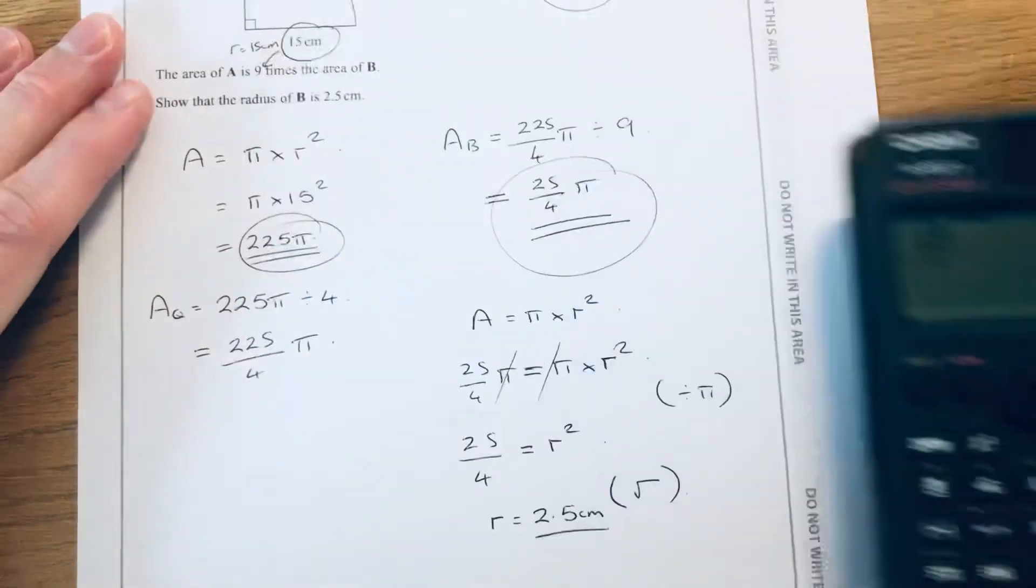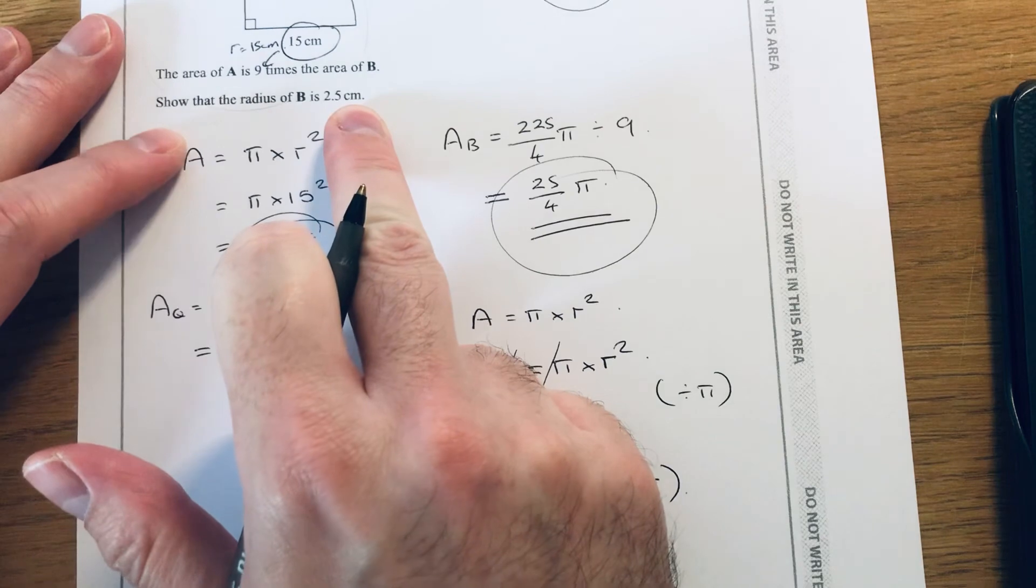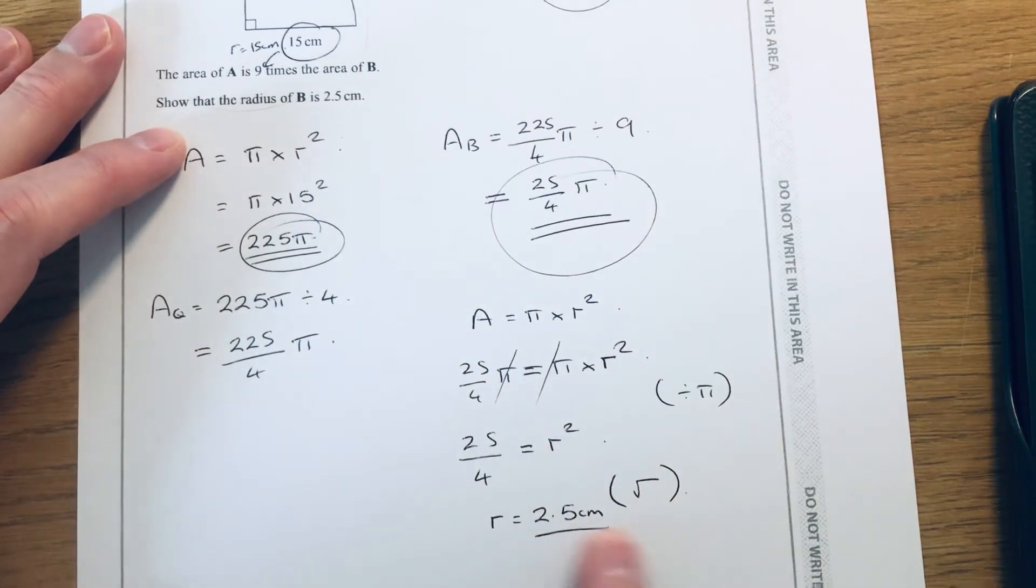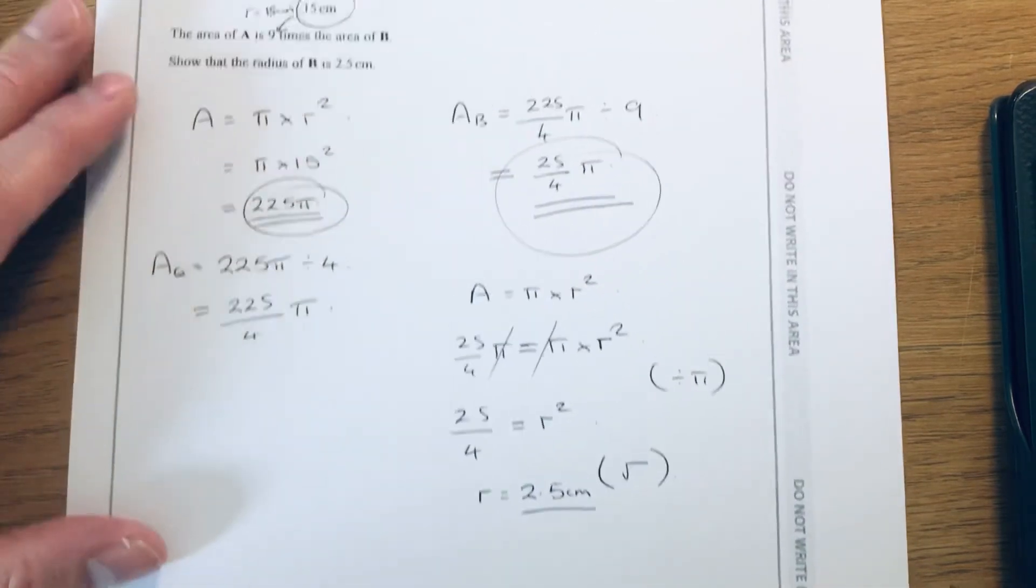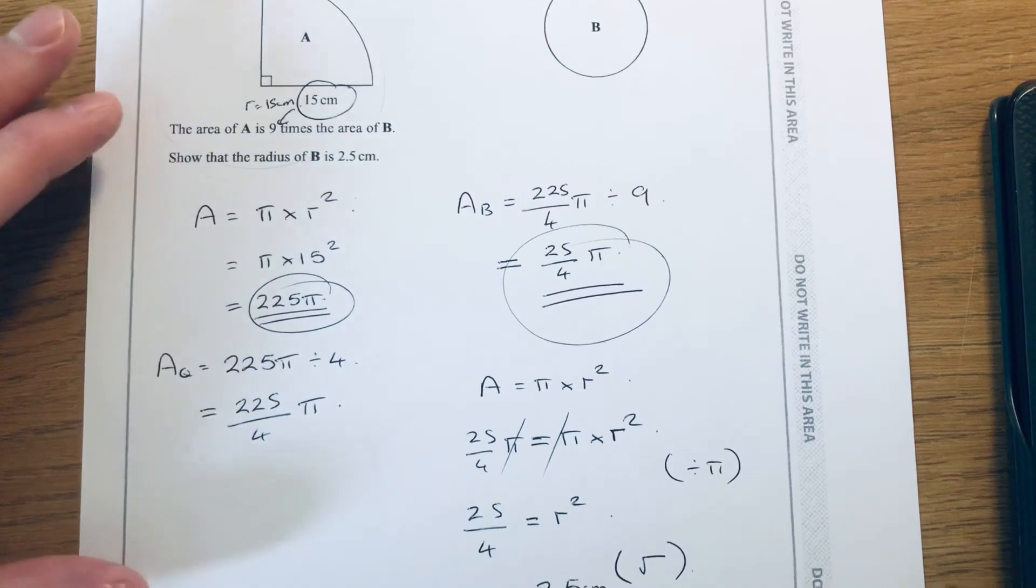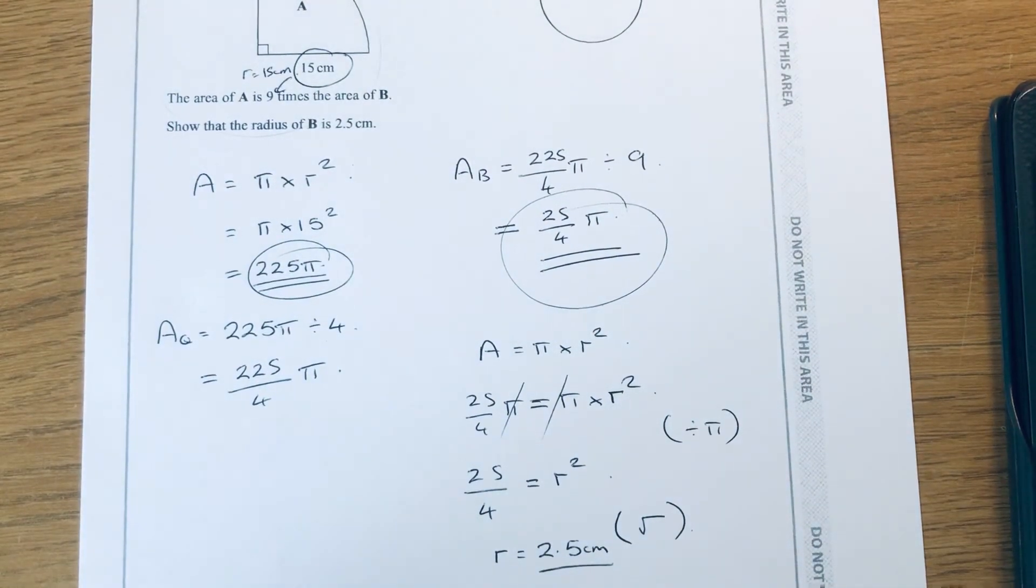I think that's what they said in the question. So it says show that the radius of B is 2.5, and that's it. So it's quite a lot of work really because it was a three-mark question. It's quite a difficult one for three marks. So I hope you like this video. If you did, like and subscribe. Thanks for watching guys, bye bye.